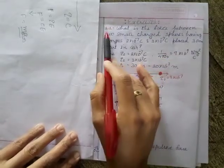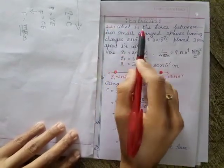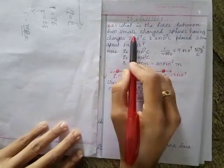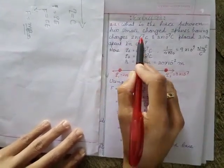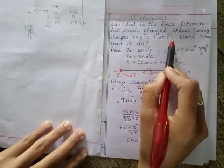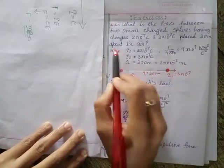With exercises, question number 1.1: What is the force between two small charged spheres having charges 2×10⁻⁷ coulomb and 3×10⁻⁷ coulomb placed 30 centimeter apart in air?